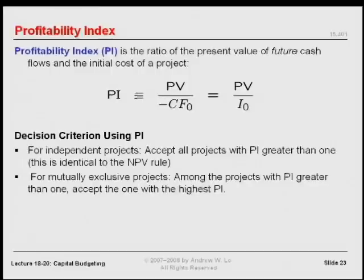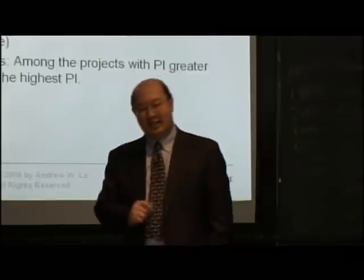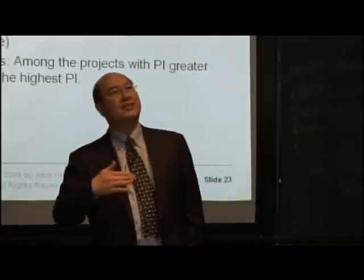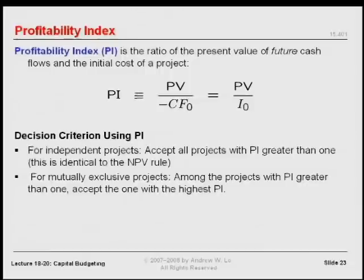Second method: the profitability index. This one is another easy criterion to criticize, but it's so close to NPV that the only real issue is the scale factor. Profitability index is simply the gross present value divided by the initial investment — you could think of it as a gross rate of return, or 1 plus the net rate of return of your investment. If the profitability index is greater than 1, take the project; if less than 1, don't take it.